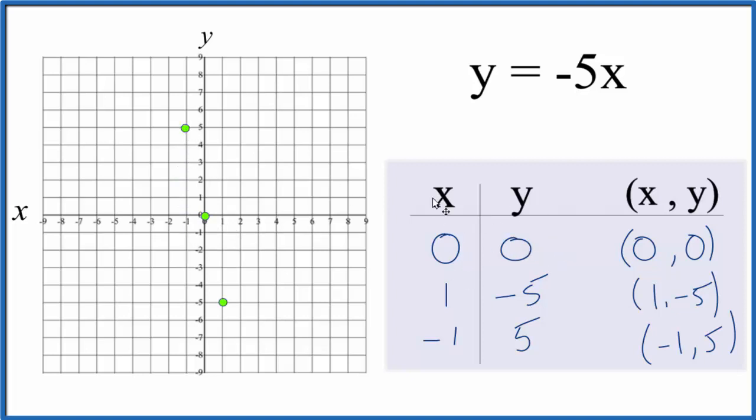We could have chosen any points. I chose 0, 1, and negative 1 because I was pretty sure they fit on the graph paper. So let's put a line through this. Then we'll put arrows to show that it goes to infinity. So this is the graph for y equals minus 5x.